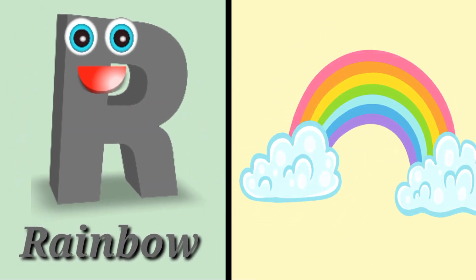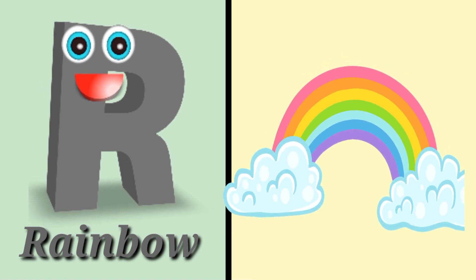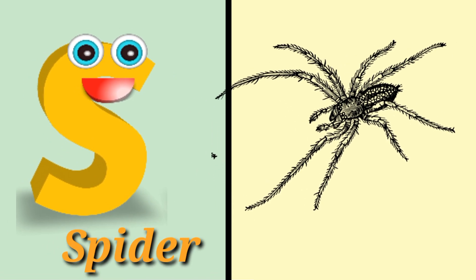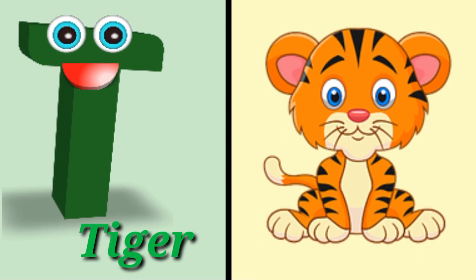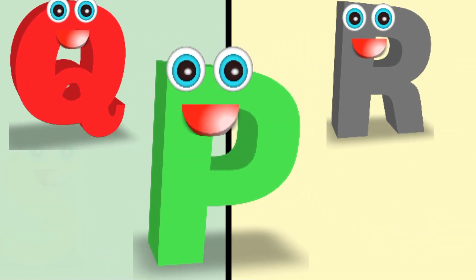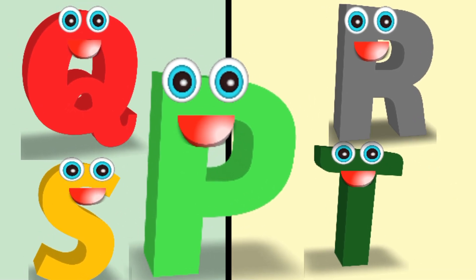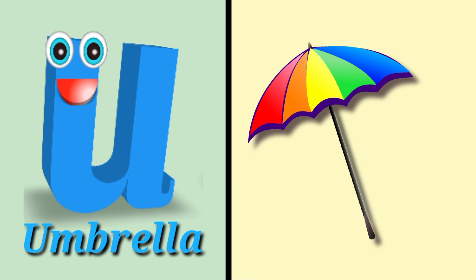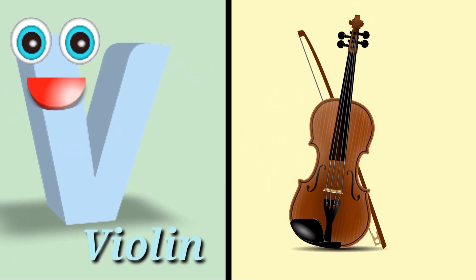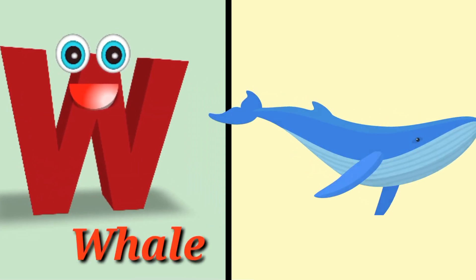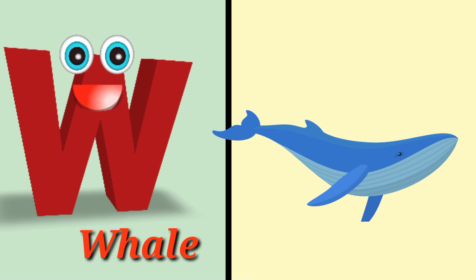R is for rainbow. S is for eagle. T is for tiger. U is for umbrella. V is for vitamin. W is for covid, W is for orange.